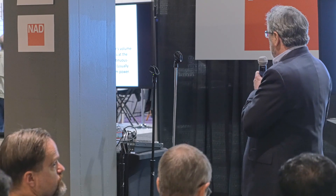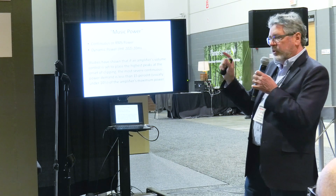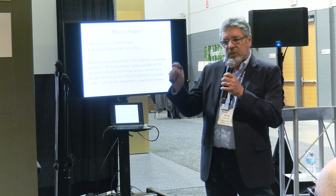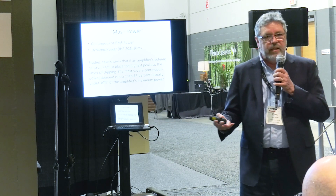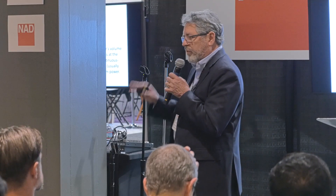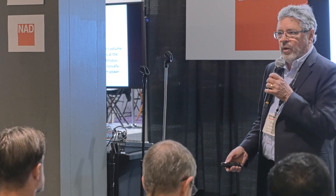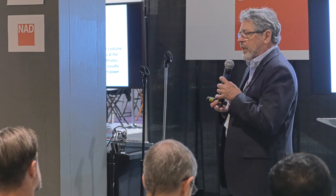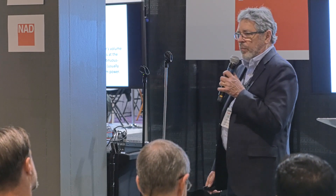Our studies showed that an amplifier's volume control, if set just below clipping for the highest peaks, means the average sound is much less than that — only about 10 to 15 percent. So in theory, if you could have an amplifier that handles those peaks very well, you could have a fairly low continuous power. That's actually something you do see in some of the more modern amplifier designs.